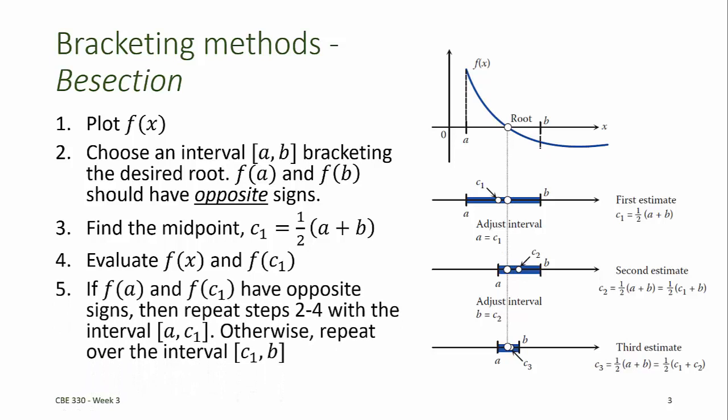If f at a and f at c1 have opposite signs, it's assumed that the root that we're looking for lies on that interval. If f at a and f at c1 do not have opposite signs, then the root must be on the interval c1, b. So we repeat steps 2 through 4 using that interval instead.